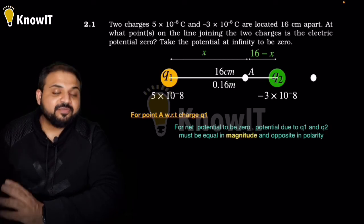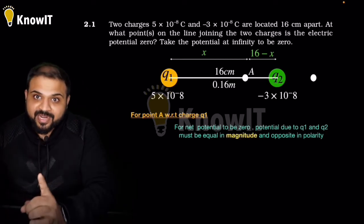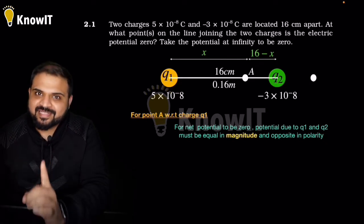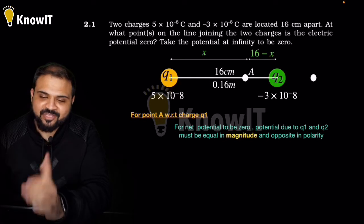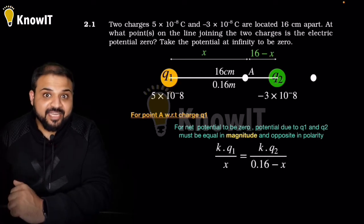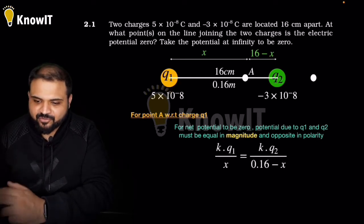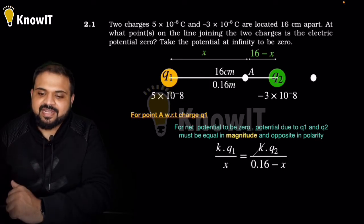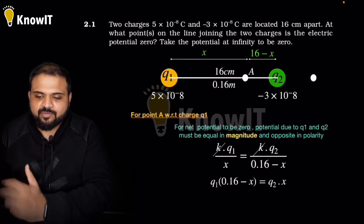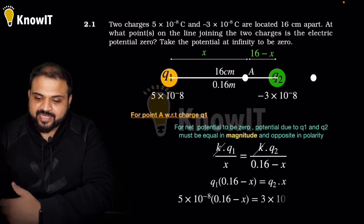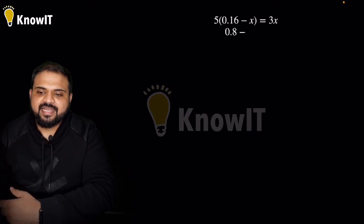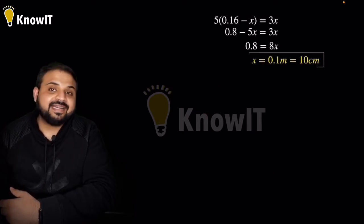For net potential to be zero, the magnitude of potential due to Q1 and potential due to Q2 must be the same. So we compare the magnitudes: KQ1/X must equal KQ2/(0.16 − X). K cancels out, giving Q1(0.16 − X) = Q2·X. Putting the values of Q1 and Q2 and solving, you get X = 0.1 meter, that is 10 cm.